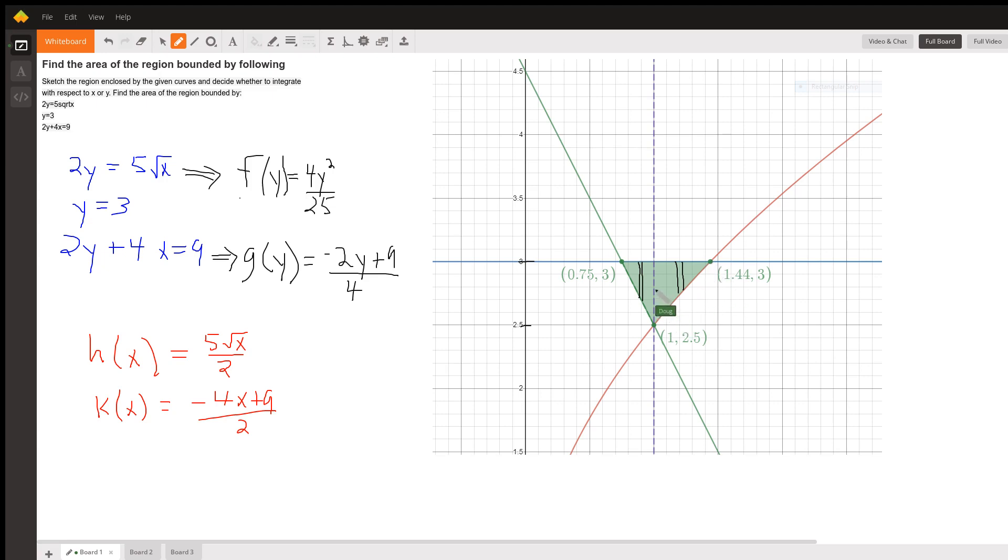And as you can see, if we want to find a formula for the area of a rectangle, the length of that rectangle is going to be top minus bottom. But that's going to change at x equals 1. So we're going to have two definite integrals from 0.75 to 1.